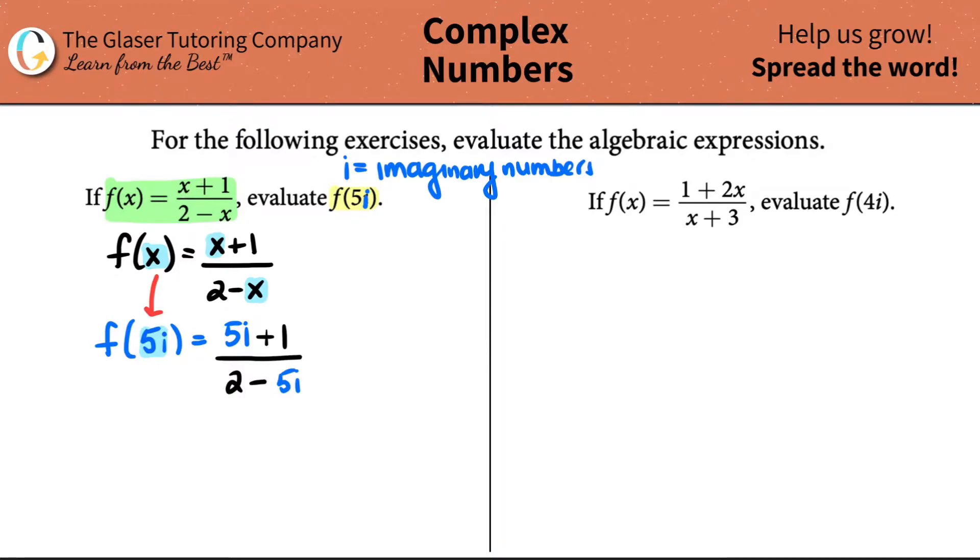This would equal 5i plus 1 all over 2 minus 5i. Now, chances are a lot of students would just box this answer off and say, hey look, I solved, I can't really do much more. But there is a thing that we have to do here. The key with imaginary numbers is that imaginary numbers can never, ever be in the denominator.